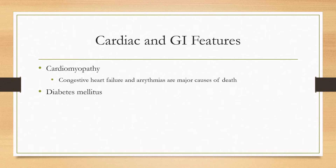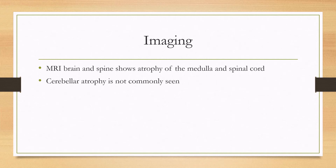Since frataxin is highly expressed in the heart, there can be cardiomyopathy — in fact, most patients will have cardiomyopathy. This results in a major cause of death being congestive heart failure and arrhythmia. A minority of patients will also have diabetes mellitus, since frataxin is also highly expressed in the pancreas.